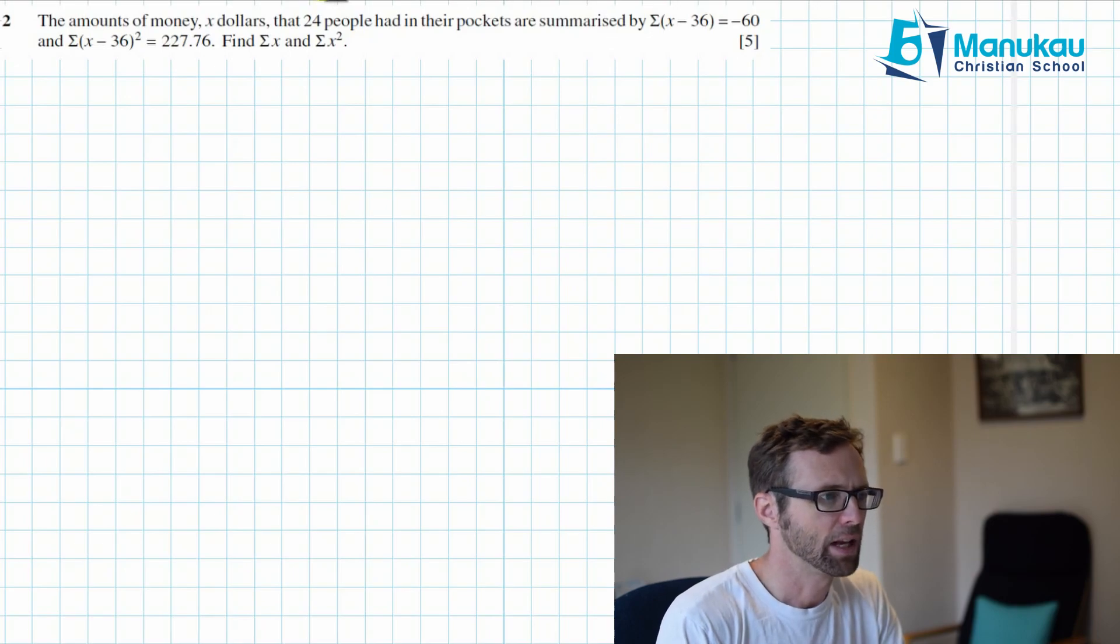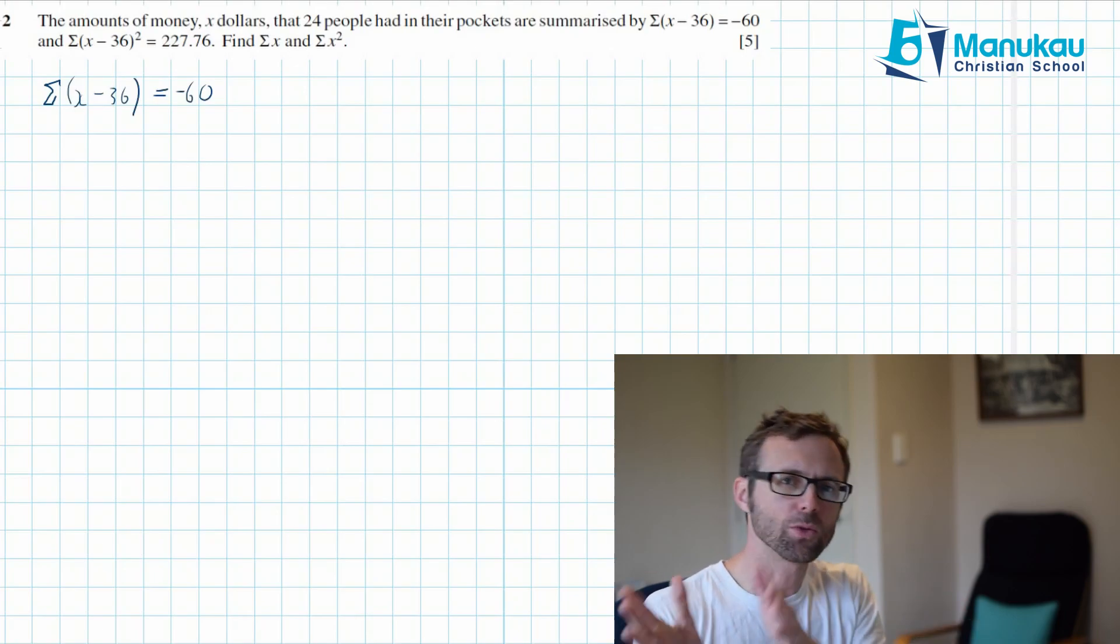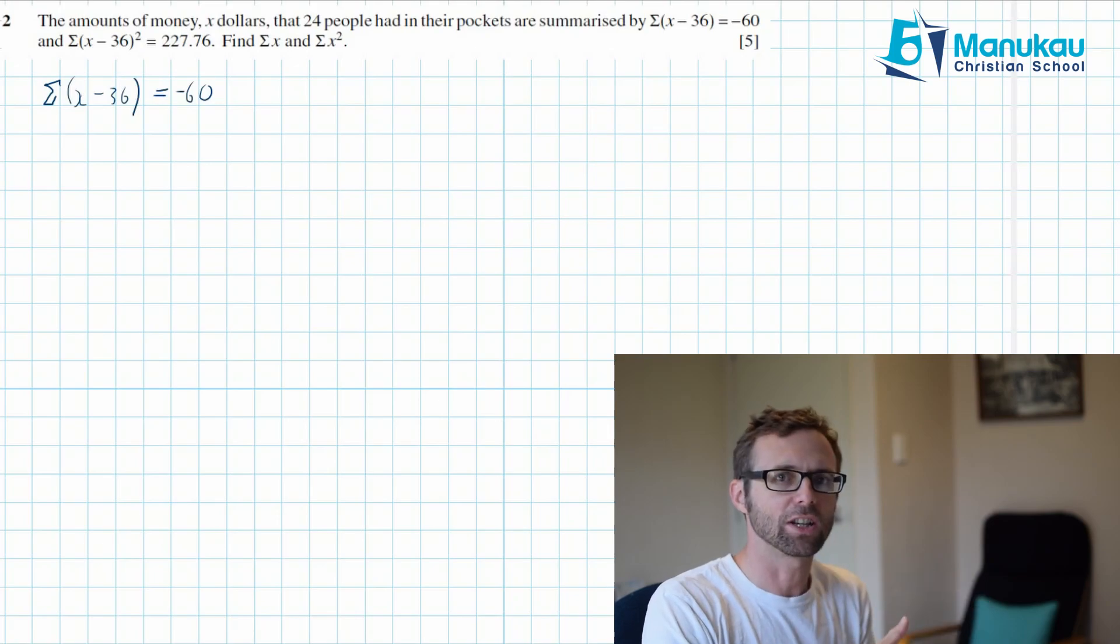Now what does this mean? We've got the sum of X minus 36 and we are told that it's equal to negative 60. So what does that actually mean? What it means is we've taken each of those 24 points of data, we have subtracted 36 from each of those points of data and then summed them all together.